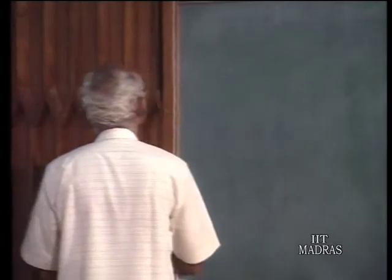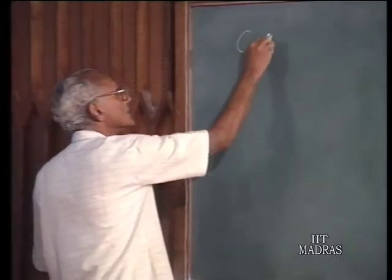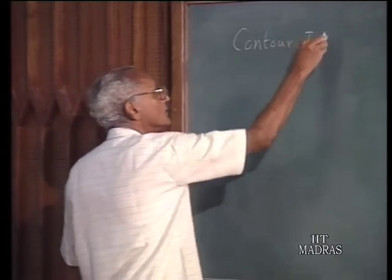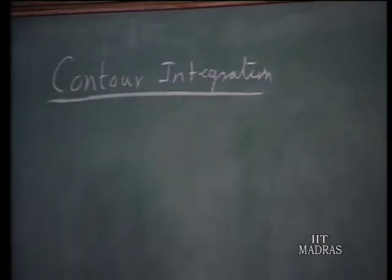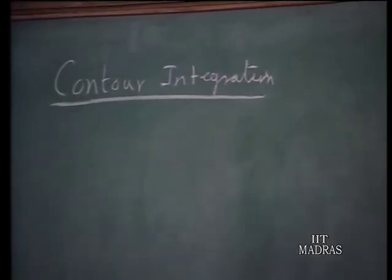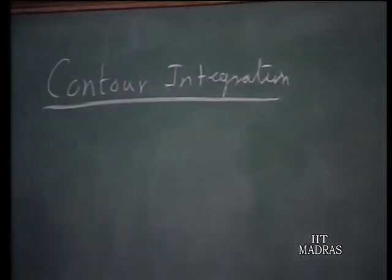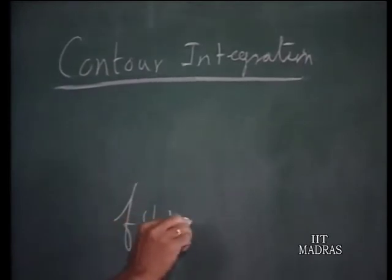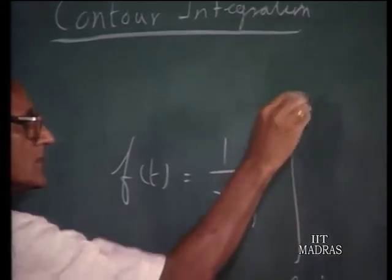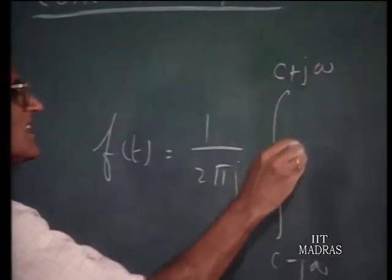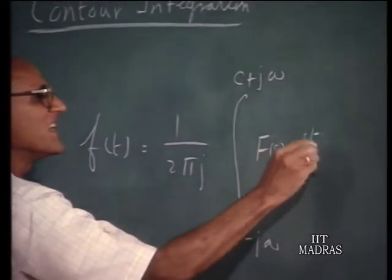We have seen the method of finding the inverse Laplace transformation using partial fraction expansion. There is another method, contour integration, which is more fundamental and stems from the very definition of the inverse Laplace transformation. Recall that the inverse Laplace transformation f(t) is 1 over 2πj times the integral from c minus j∞ to c plus j∞ of F(s) e^(st) ds.